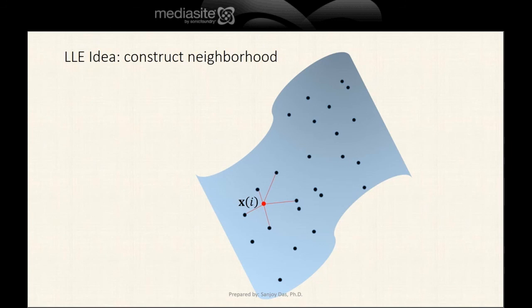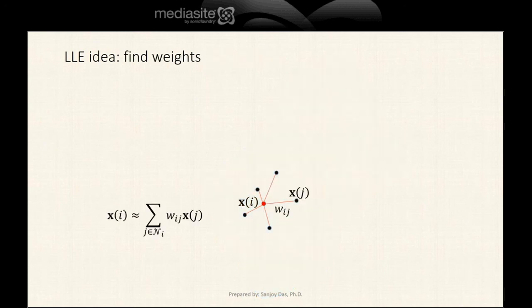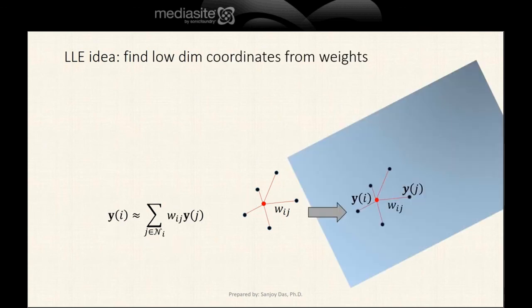To summarize, here is the trick behind LLE. Around each sample Xi, it takes a neighborhood of size k, then finds weights Wij so that each sample point is approximately equal to the linear combination of its neighbors. Then, using the weights, it constructs the low-dimensional embedding such that the same relationship holds. The Yi can be expressed as the same weighted combination of their neighboring Yj.